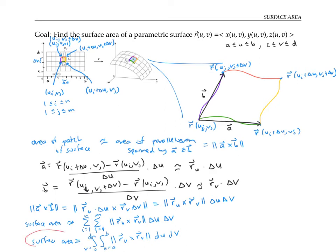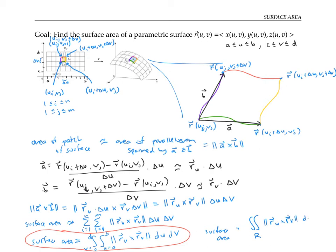So now we have a formula for surface area of a parametrized surface. Although we worked out this formula for the case where u and v range over a rectangle in the uv-plane, the same idea works even if u and v range over some other region. In that case, we write surface area equals the double integral over that region D in the uv-plane of |r sub u cross r sub v| dA.